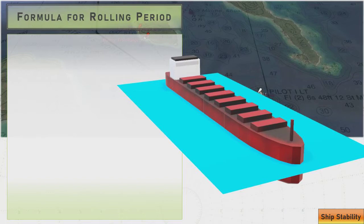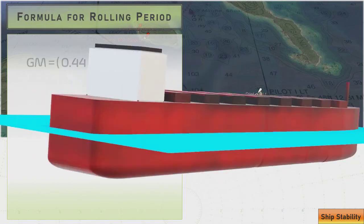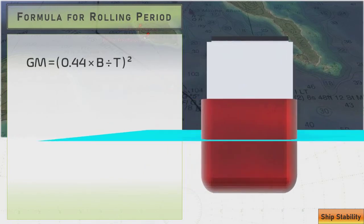There it is, that's our formula. So let's take a look at a transverse cross-section here and break down the different parts of the formula. GM or metacentric height is a vertical distance, it's a measurement that runs between two points that are perpendicular to the vessel centerline.